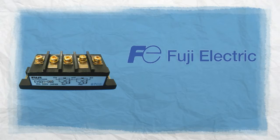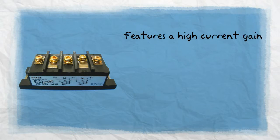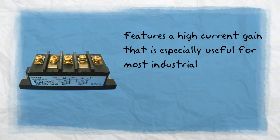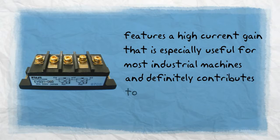EVG31050 from Fuji features a high current gain that is especially useful for most industrial machines and definitely contributes to a very productive operation.